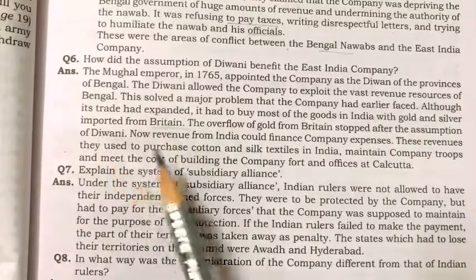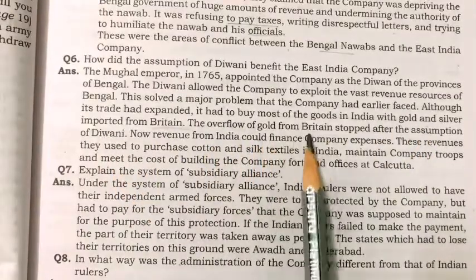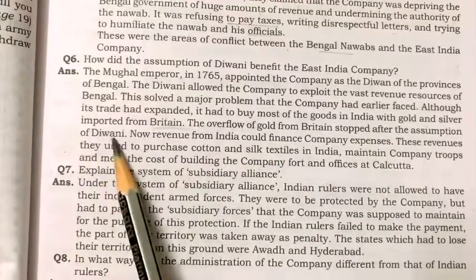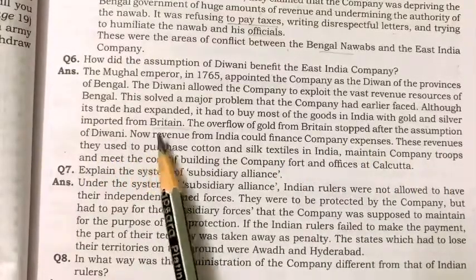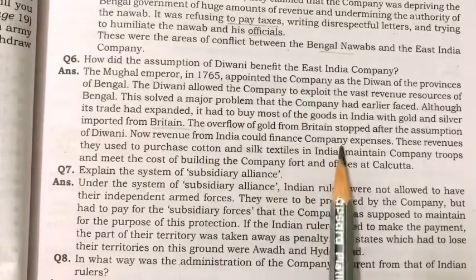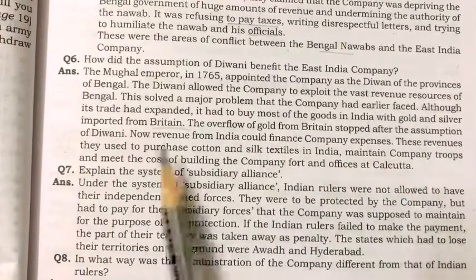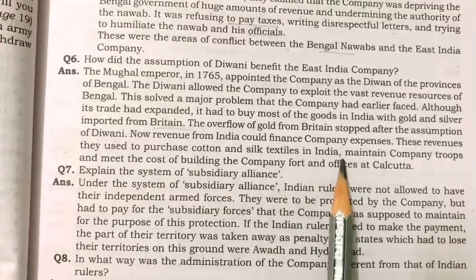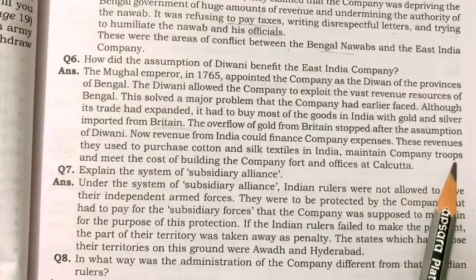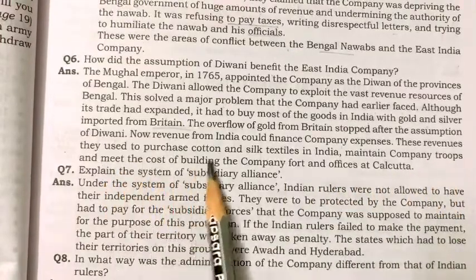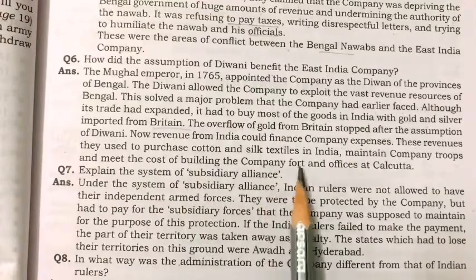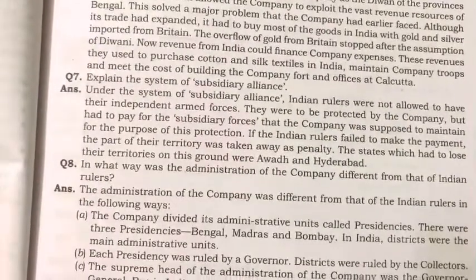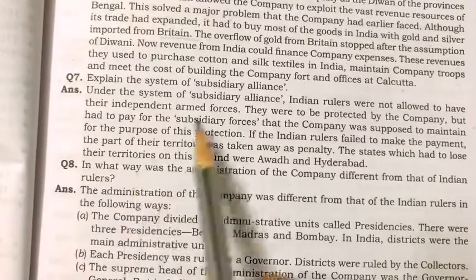The outflow of gold from Britain stopped after the assumption of Diwani. Now revenue from India could finance company expenses. These revenues were used to purchase cotton and silk textiles in India, maintain company troops, and meet the cost of building company forts and offices at Calcutta. Explain the system of Subsidiary Alliance.